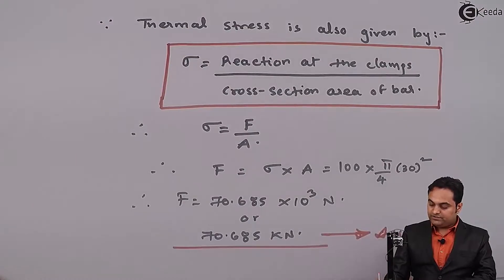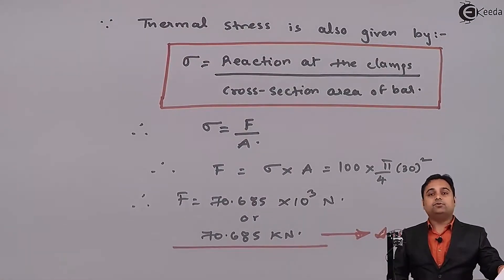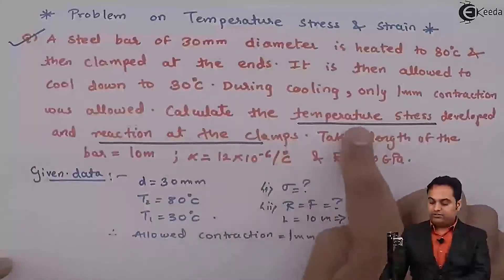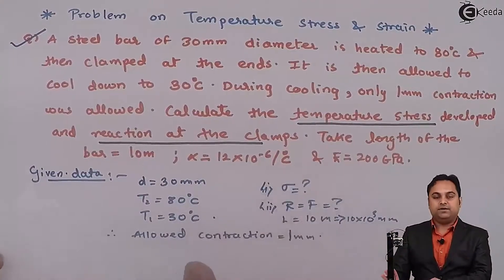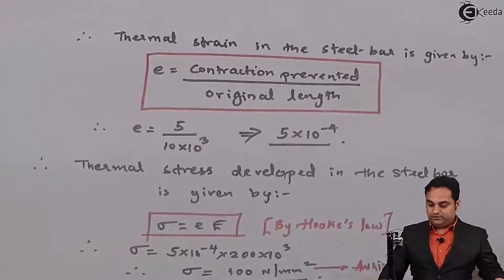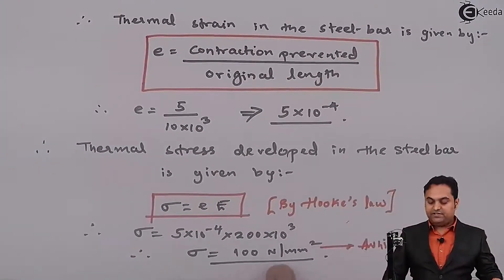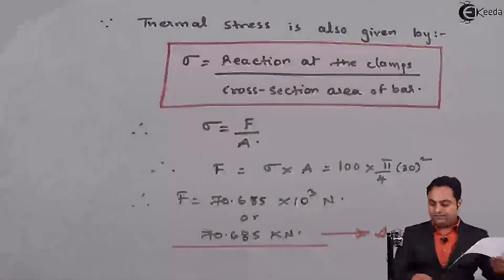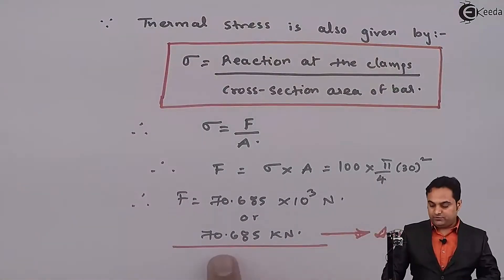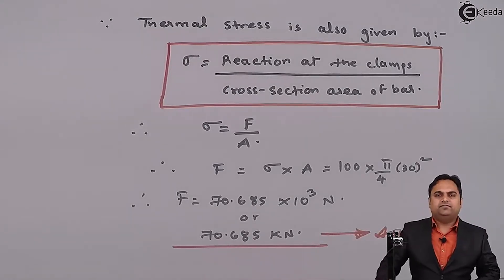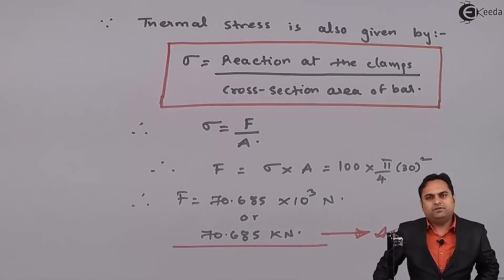So this is the second answer. If we look at the question, there were two things asked: calculate the temperature stress and reaction at the clamp. We have found out the temperature stress as 100 newton per mm square, and the reaction at the clamp is 70.685 kilonewton. With this we complete the question.